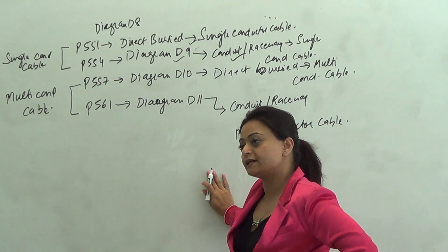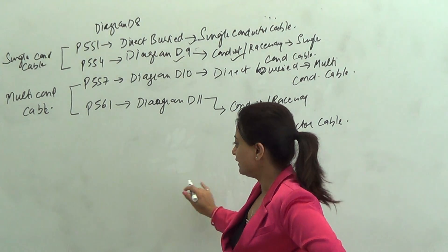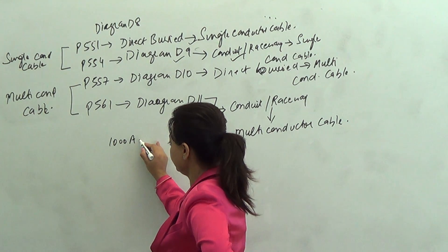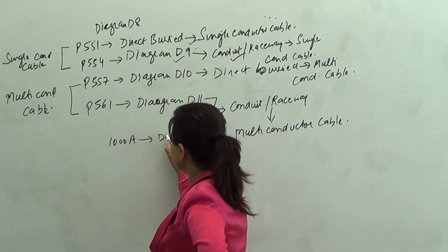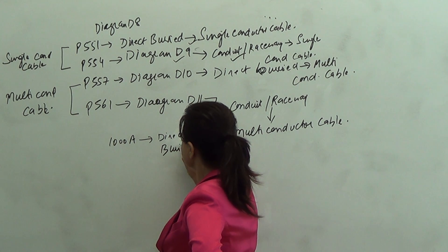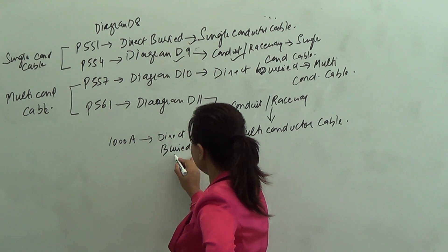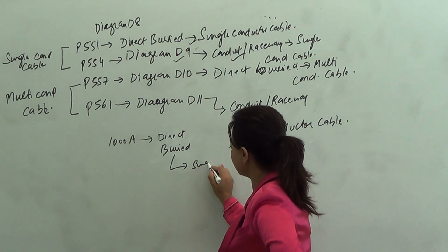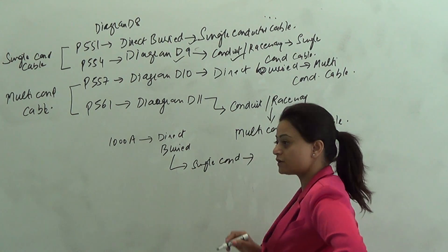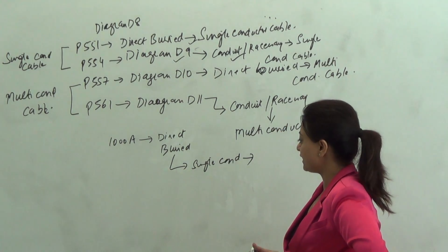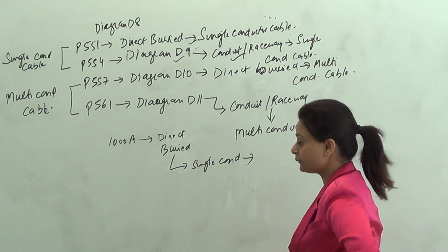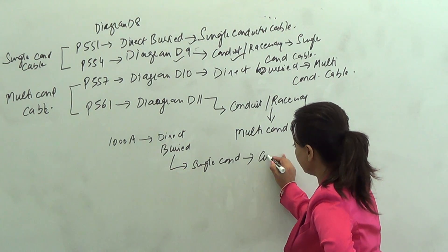So the question that I just asked you guys: I have 1000 amp service, I am installing the conductors underground, they are directly buried, and the conductor I am choosing is single conductor cable. All you had to do was go to the table right behind. I didn't say copper or aluminum — if I don't say copper or aluminum, that means copper.